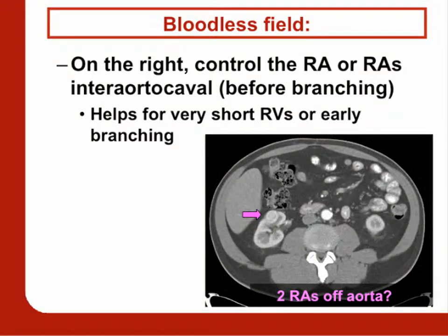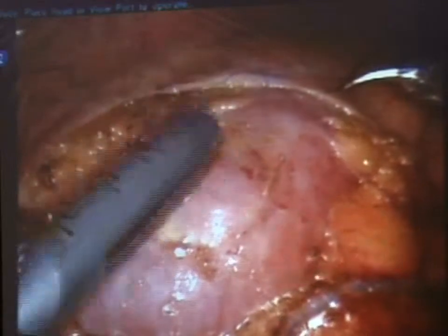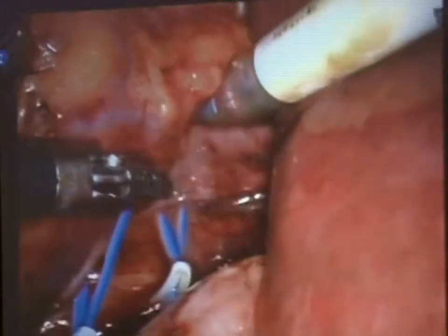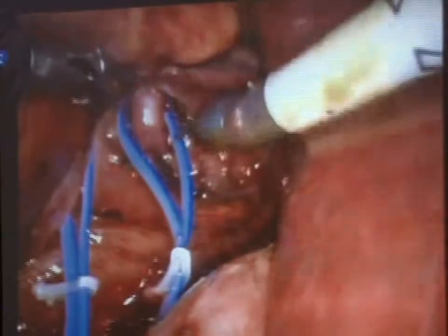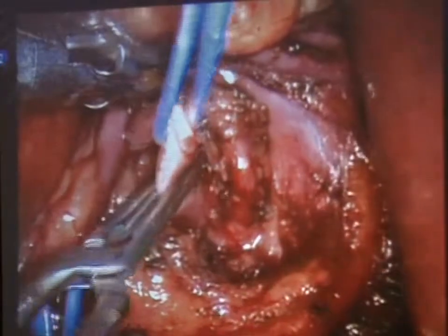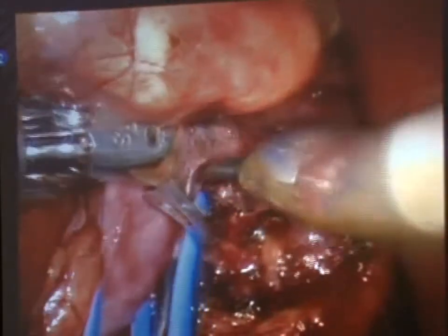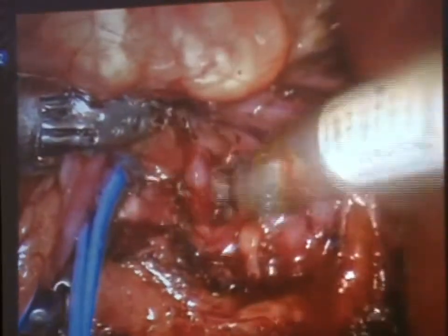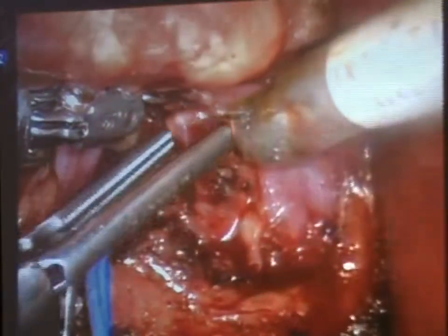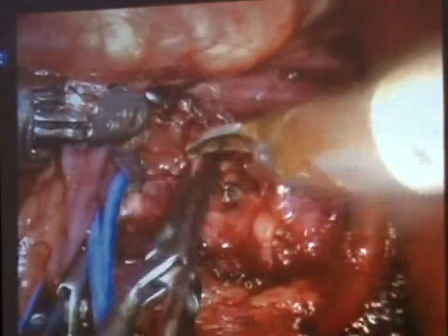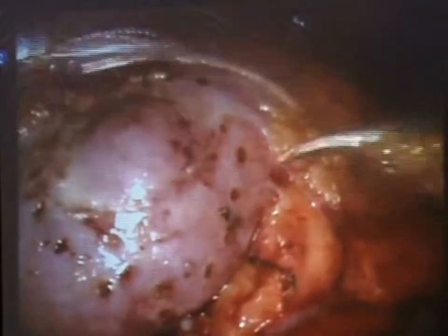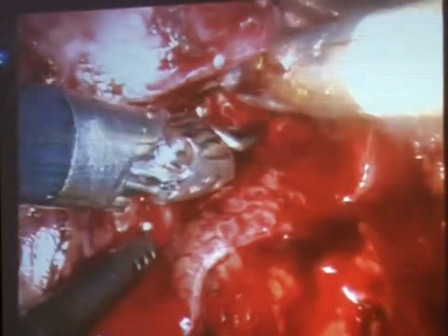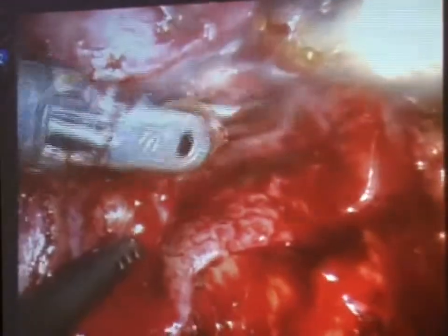On the right side you can do the same thing — it's a little more difficult to work right on the aorta, but you can go interaortocaval. Here's an example: the scan suggested the patient had two renal arteries, but what I found was actually three arteries. So I insisted on going interaortocaval, working right on the aorta, because I wanted to make sure the blood supply to this kidney was completely controlled. This is also a good technique if you have an early-branching artery — control it interaortocaval before it branches. Now we have a completely bloodless field to resect this completely endophytic tumor.